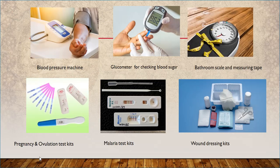These are pictures of the instruments mentioned. Top right is the blood pressure machine. If you haven't seen one, you can visit any pharmacy and check your blood pressure. Next is the glucometer — you take a prick on your finger, pick a blood sample, and it reads your blood sugar. There is also the bathroom scale and measuring tape, pregnancy and ovulation test kits, malaria test kits, and wound dressing kits.